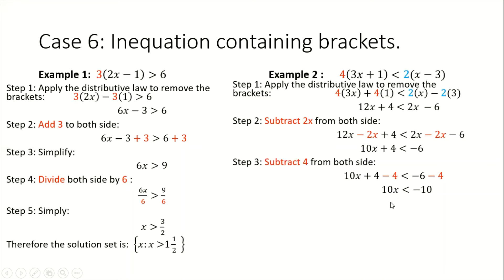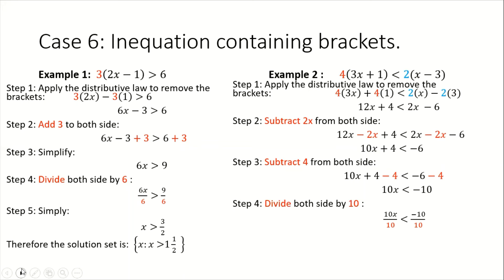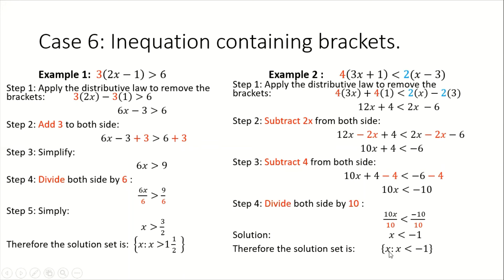At this stage we have 10x as the subject, but we want x to be the subject. So we do the opposite of multiplying by 10, which is to divide both sides by 10. We state this as 10x all over 10 less than negative 10 all over 10. When we simplify, we end up with x is less than negative 1. Hence, our solution set is the set of all x values such that x is less than negative 1.